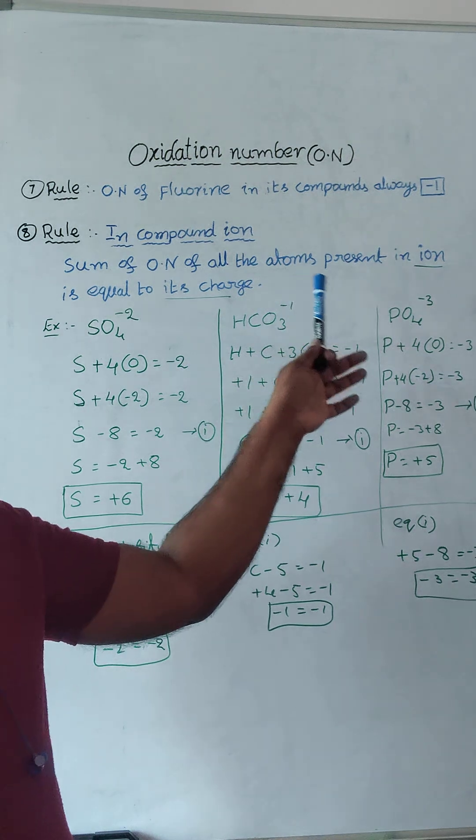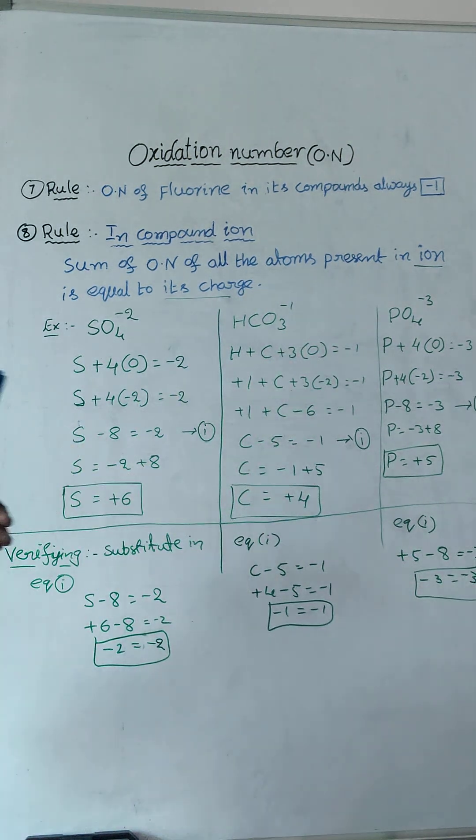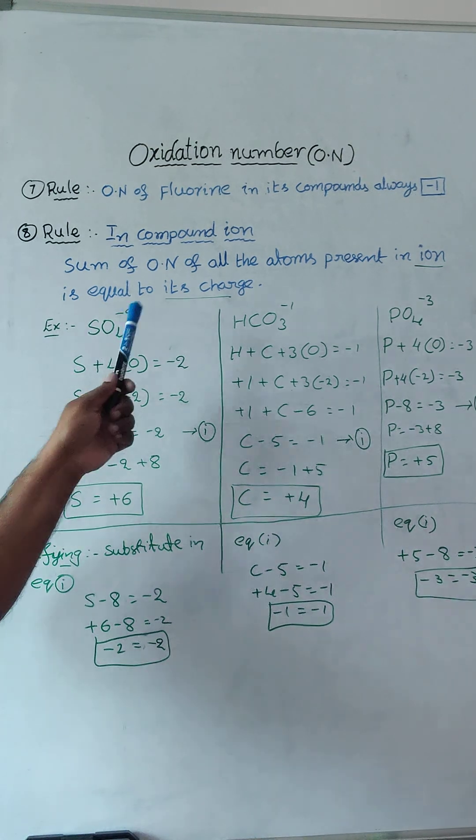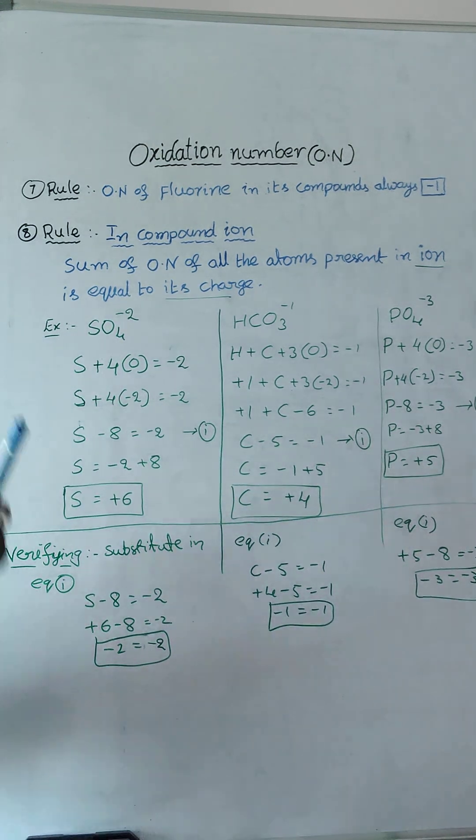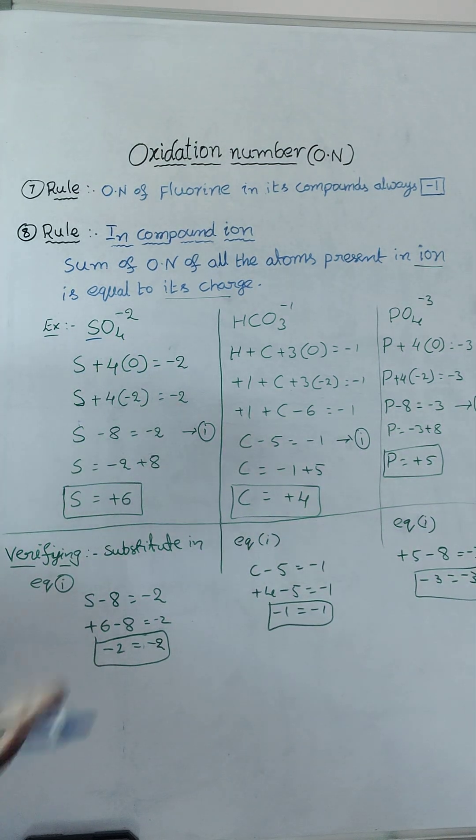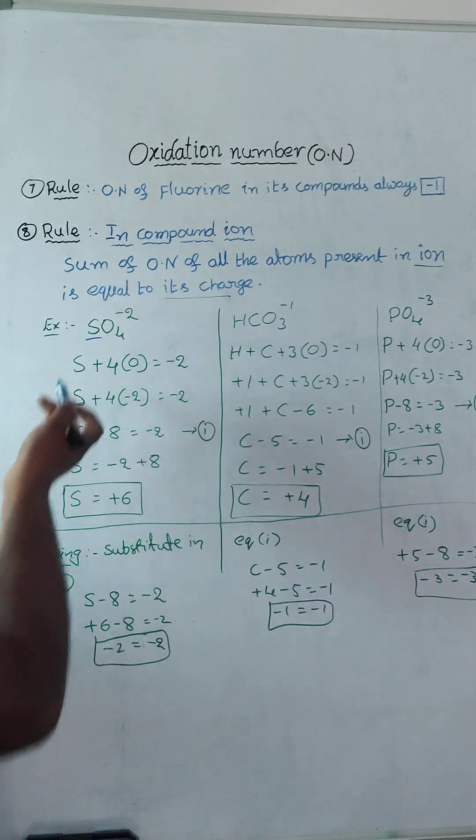For example, sulphate ion SO4 minus 2. I want sulphur oxidation number of sulphur we need. At the time, same like first rule, how we calculate? Like that only calculating.